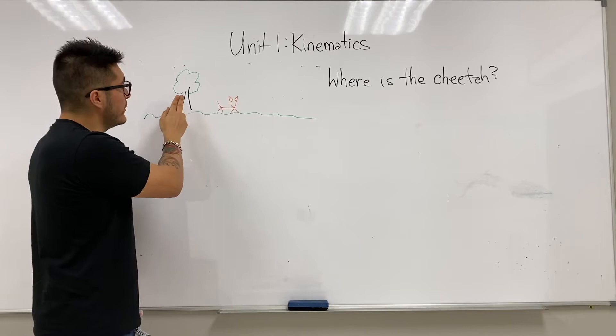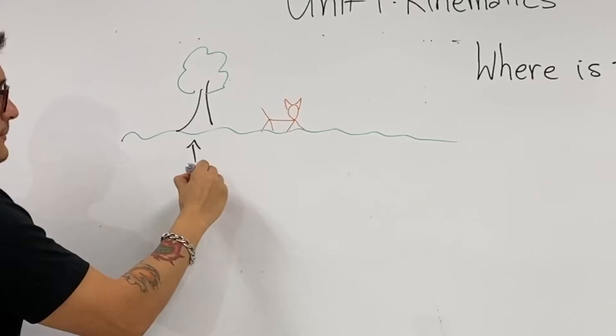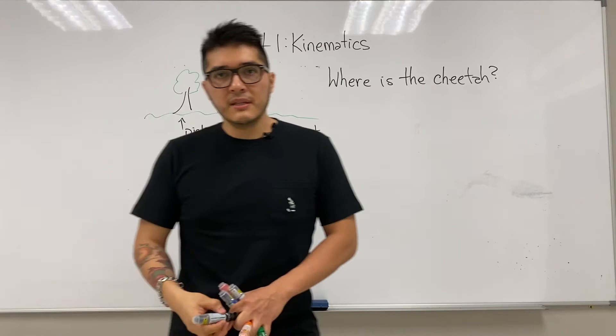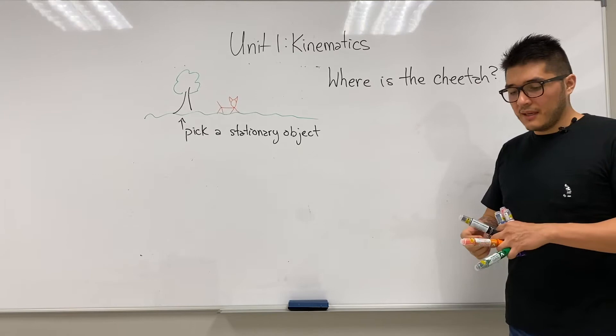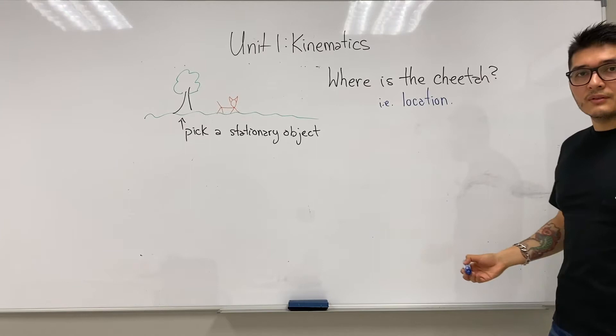We choose that because we want to answer where the cheetah is in reference to the tree. So again, pick a stationary object. Why don't we pick a stationary object? Because again, we want to answer the question: Where is the cheetah? That's the same thing as answering what is its location.